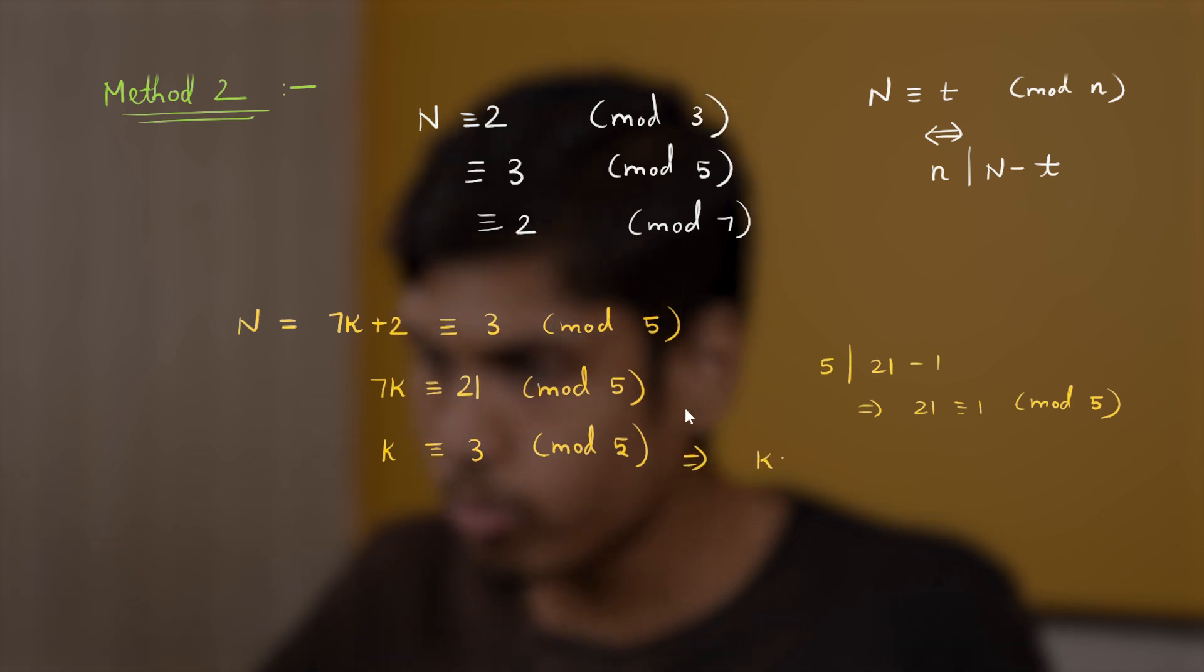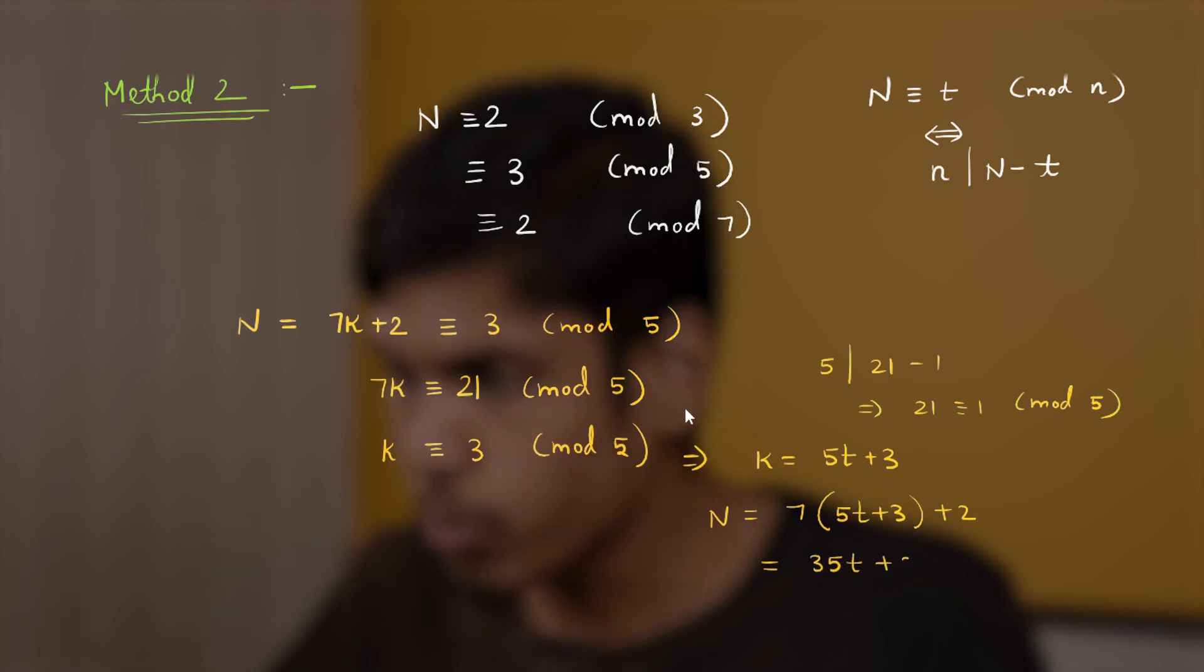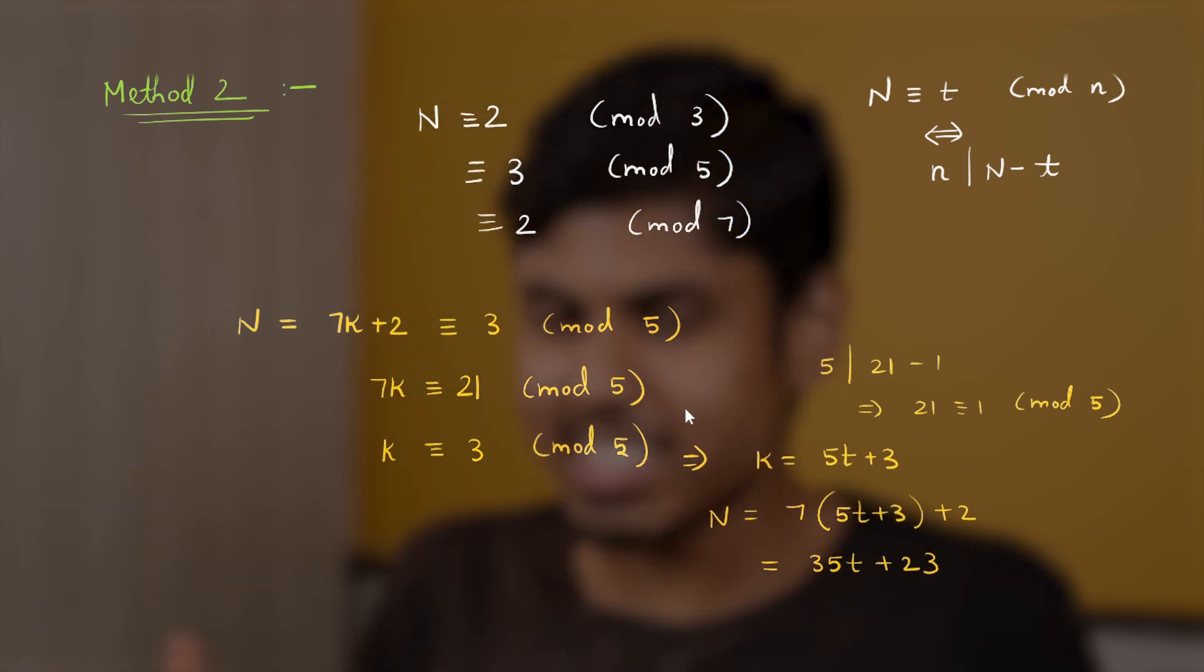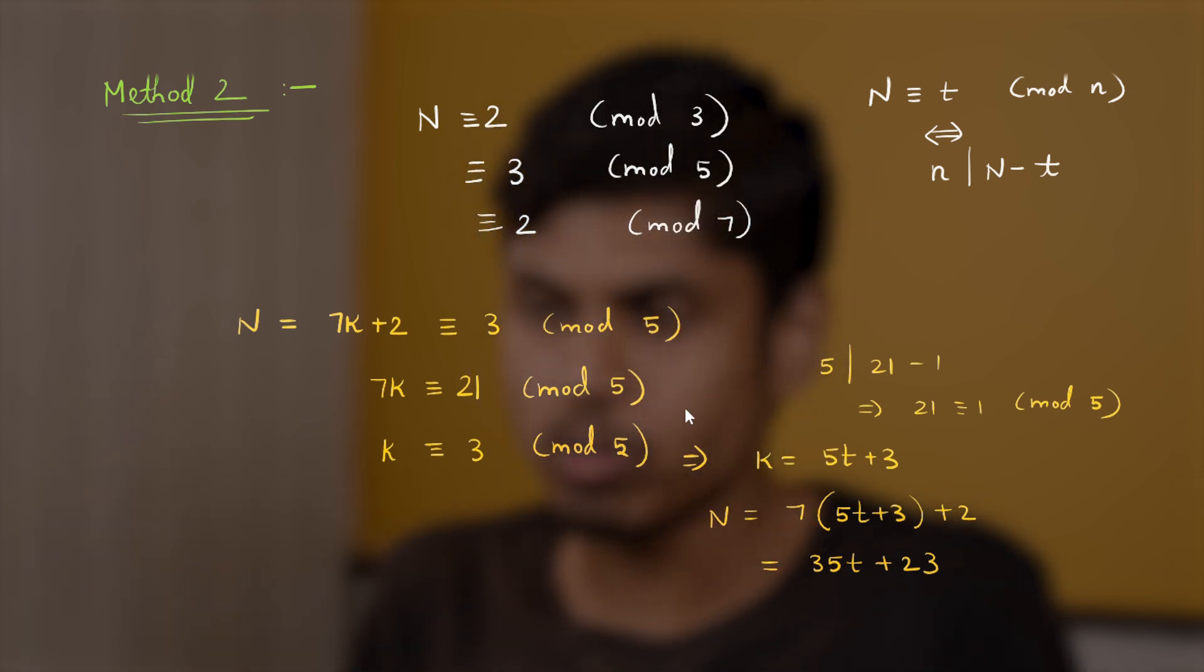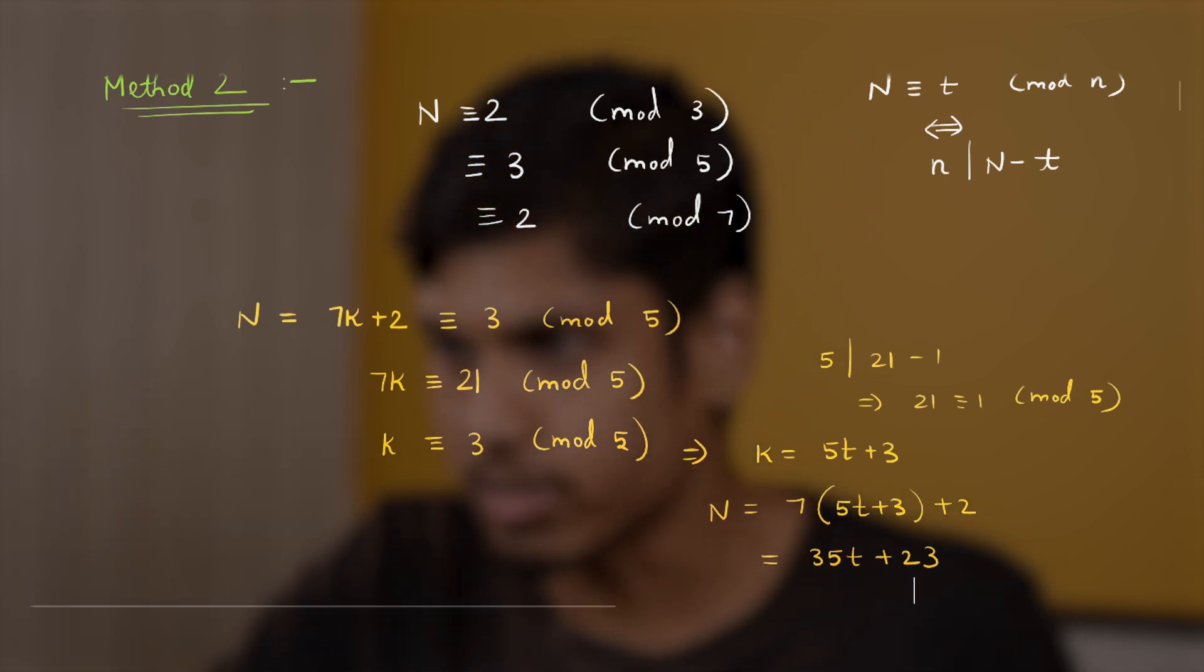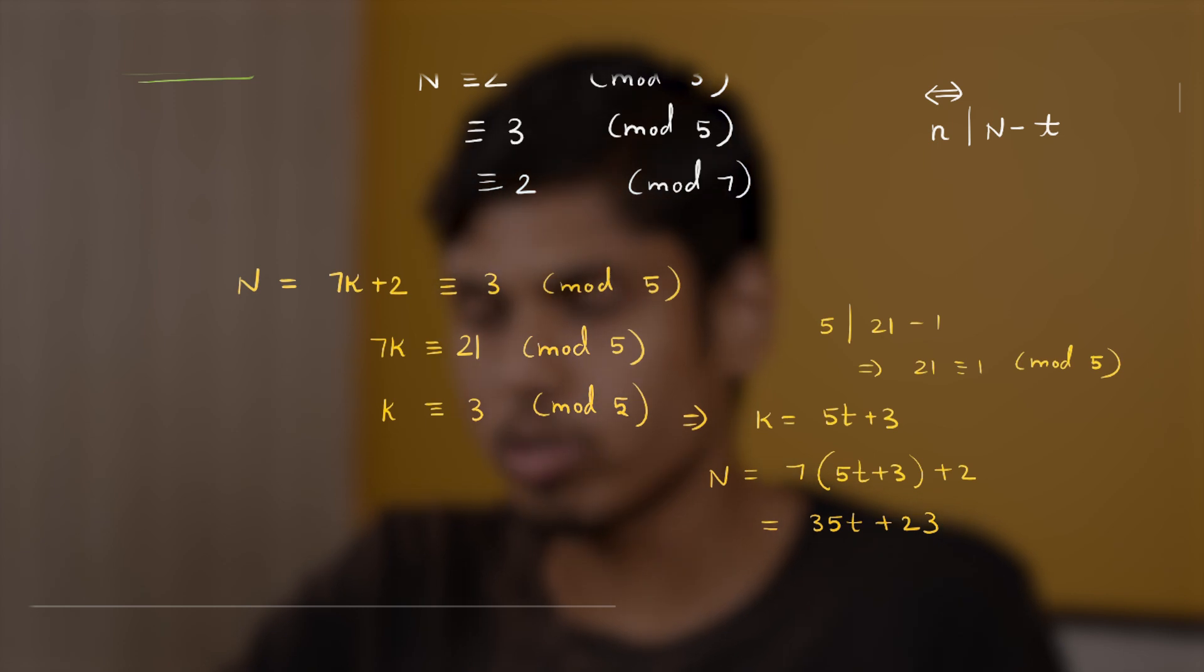So this implies k is of the form some 5t plus 3. Substituting it back we get n equal to 7 times 5t plus 3 plus 2 giving us 35t plus 23. So you can sense the solution being already reached. But be patient, we are yet to solve for one more condition. That is n congruent to 2 mod 3.